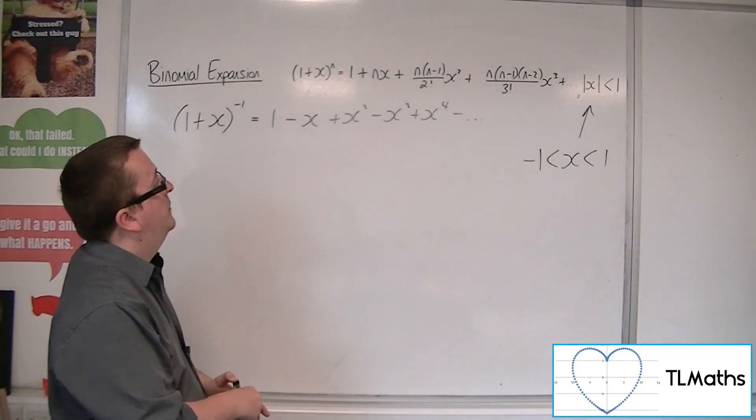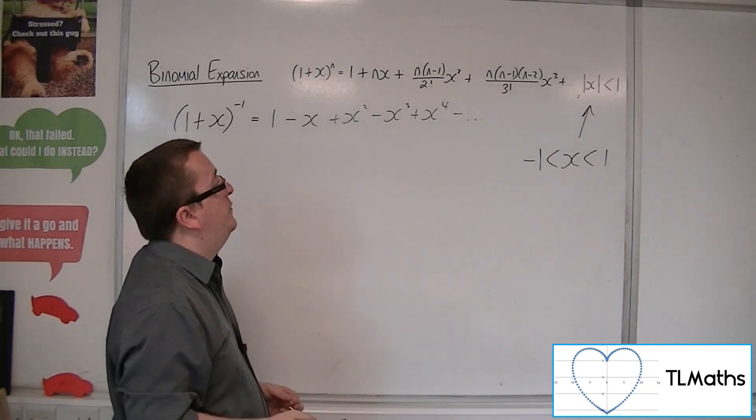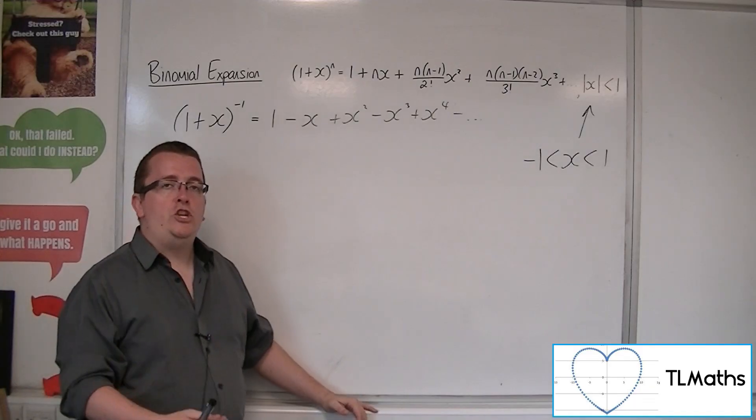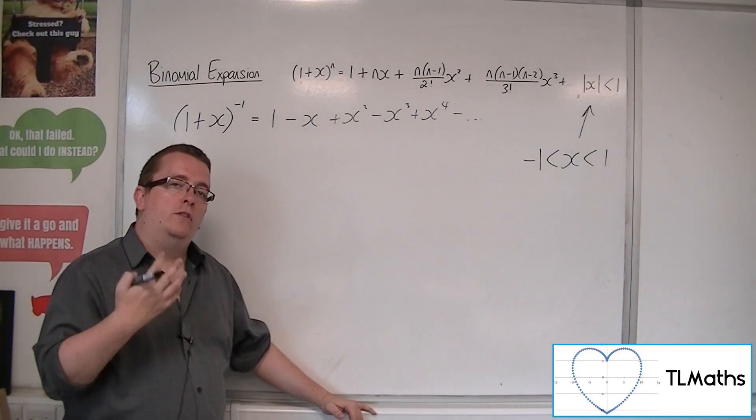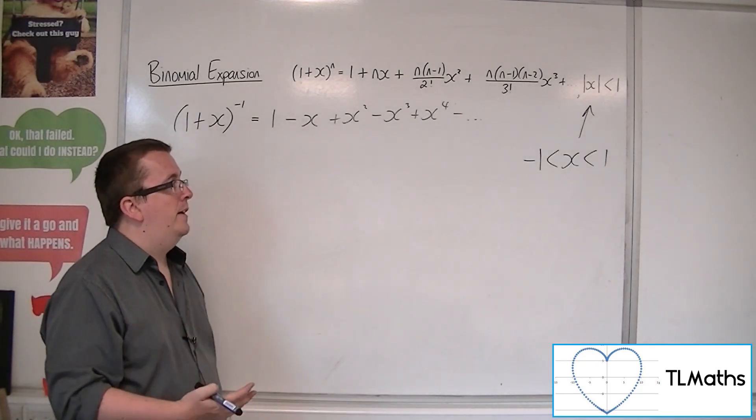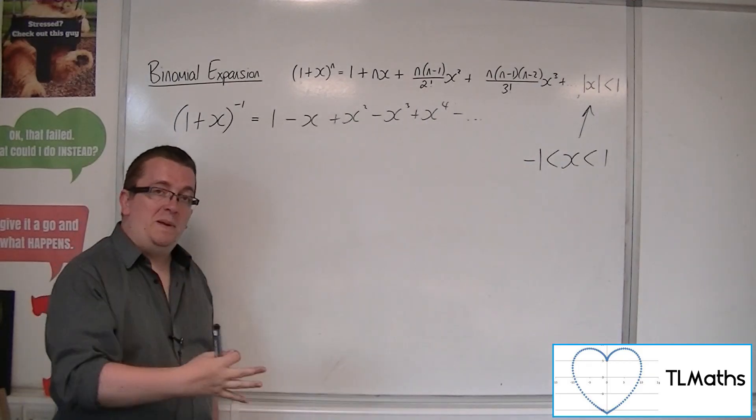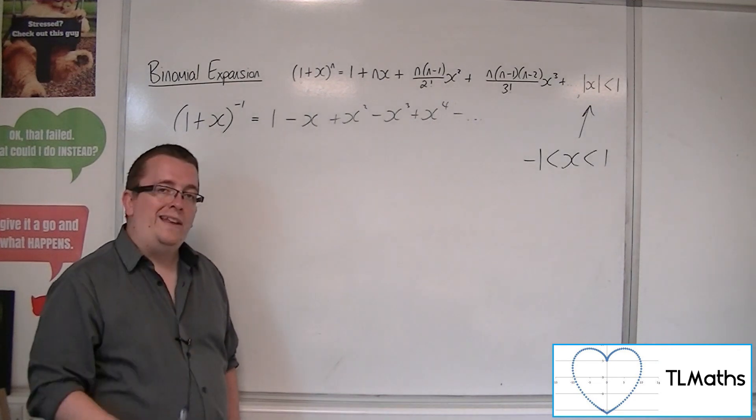So, it requires this concept of the range of validity. And we must be able to identify the range of validity for each binomial expansion that we work with. And we must identify it. In certain exam questions, they will ask for it explicitly, but you really need to understand why it's working and when it's working.